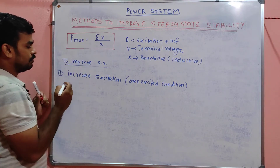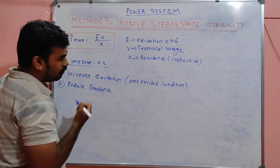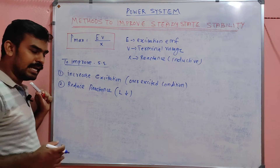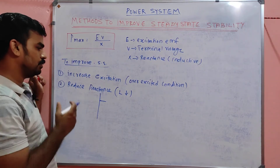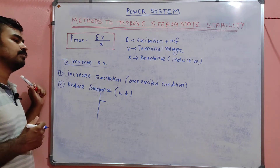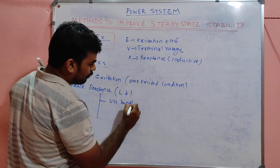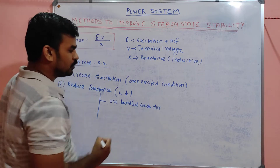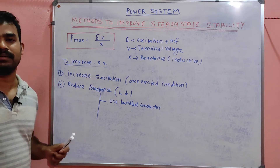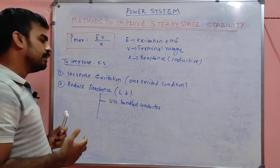The next very important method to improve the steady state limit is to reduce reactance — we should decrease L. One way to decrease L is to use bundled conductors. If you use bundled conductors, there will be cancellation of inductance due to the neighboring conductors, so the effective L will be reduced. If L is reduced, X is reduced, and P_max will be increased.